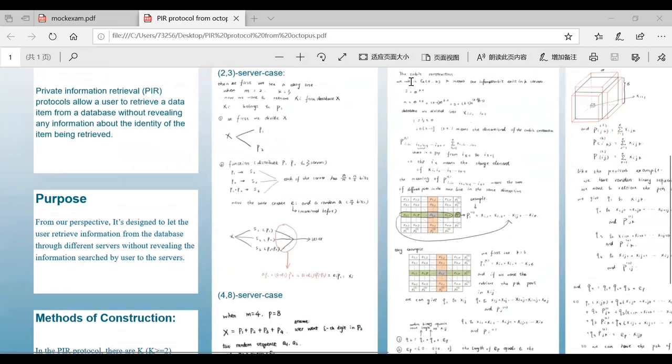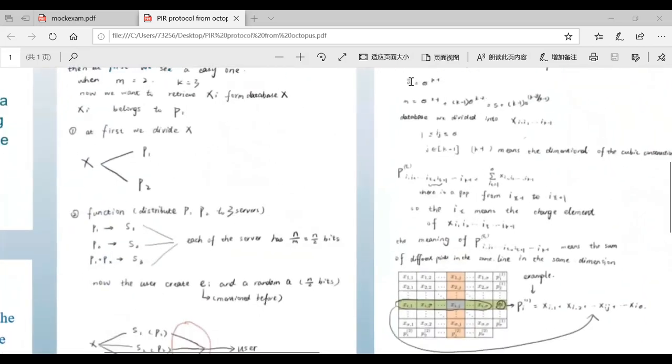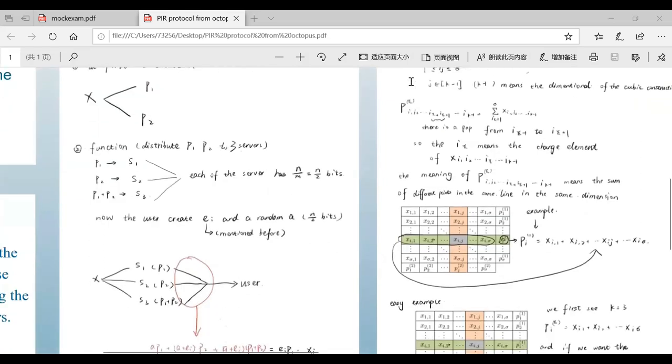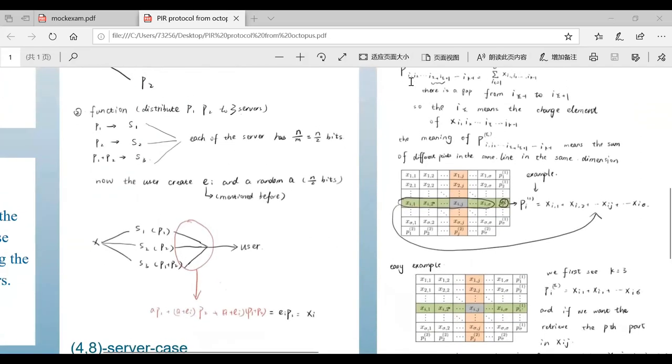And now the users create e_i and a random code a.